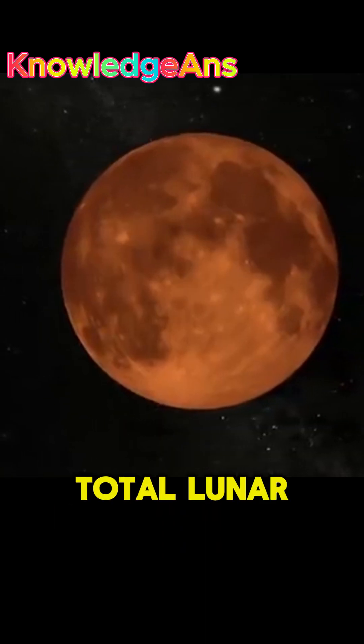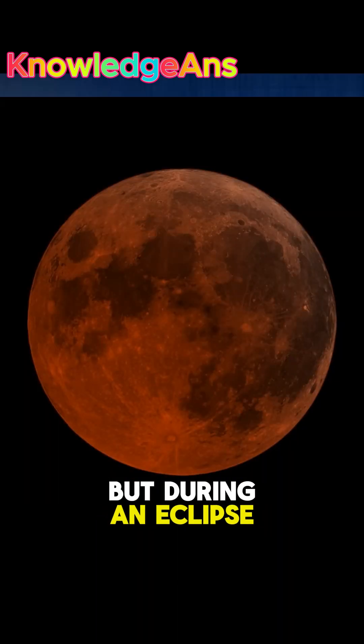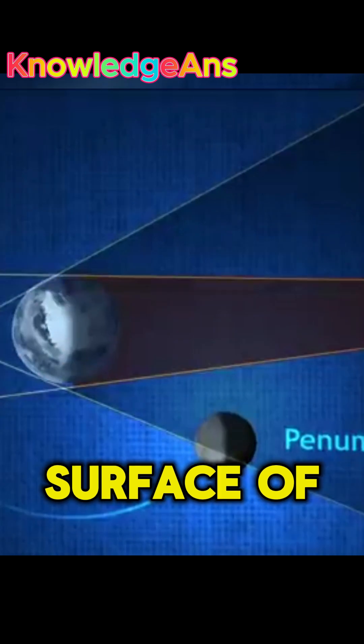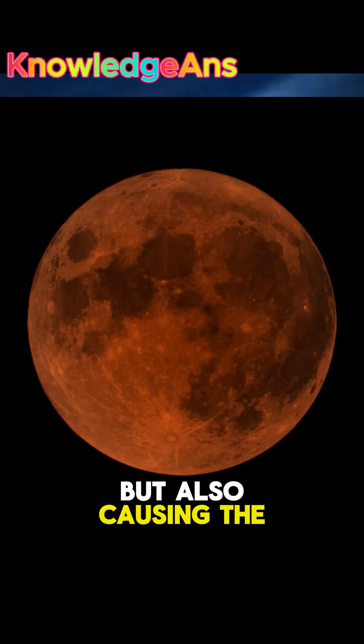Types of lunar eclipses: first, total lunar eclipse. During an eclipse, the Earth's shadow covers the entire surface of the Moon, causing the Moon to appear deep red.